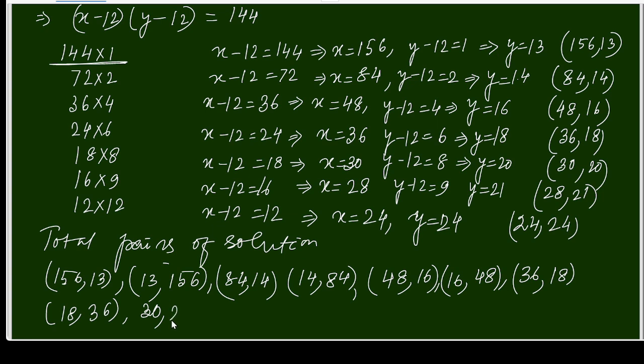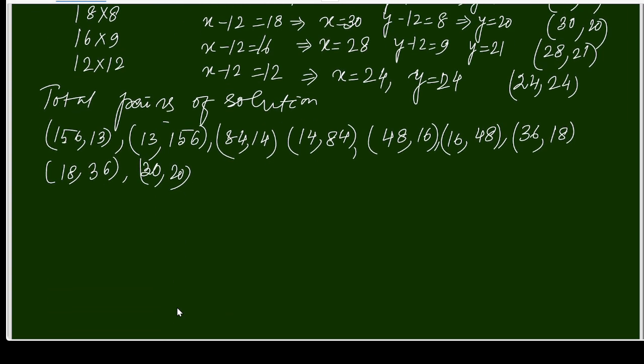(28, 21), (21, 28). And what about this? This is only one pair, that will be (24, 24). So for each factor you are getting two pairs, but the last one you are getting only one.